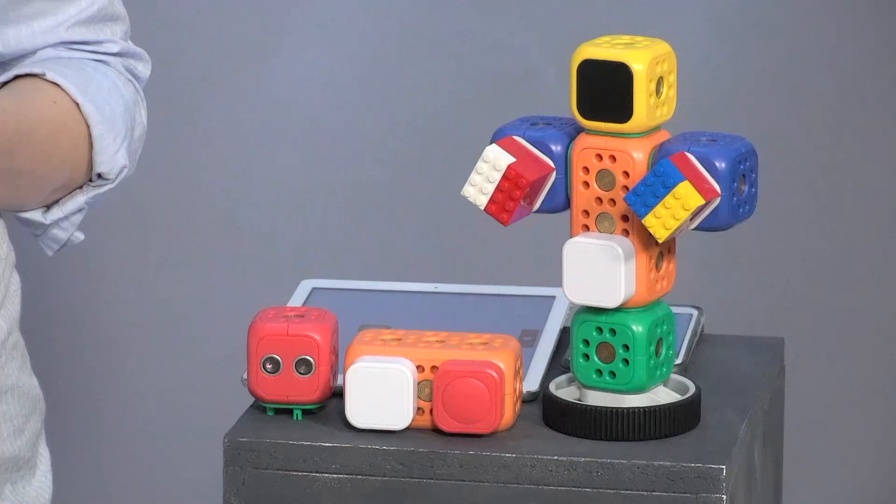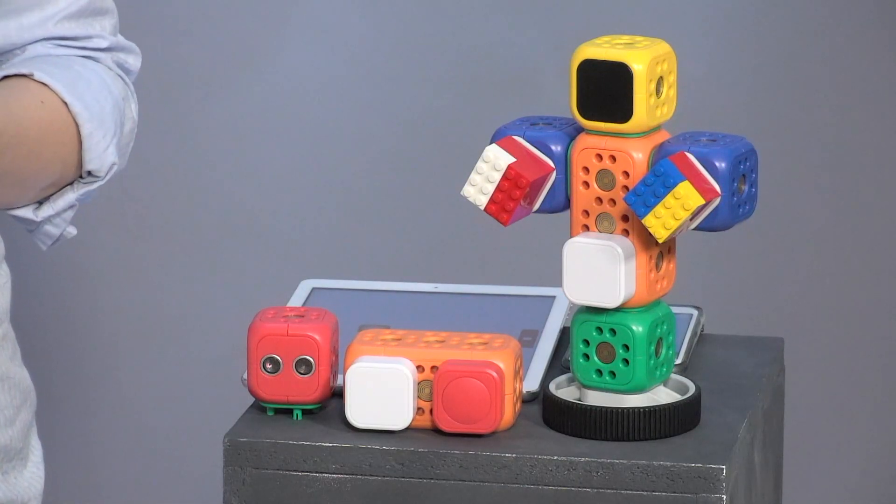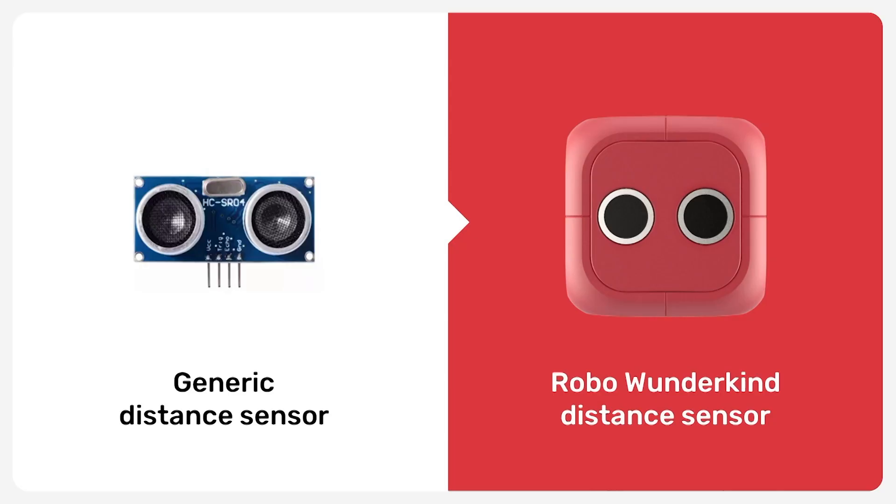We call them Robo Wunderkind Building Blocks. We take electronic components and put them inside colorful, child-friendly building blocks. By snapping those blocks together, children create their own robots.